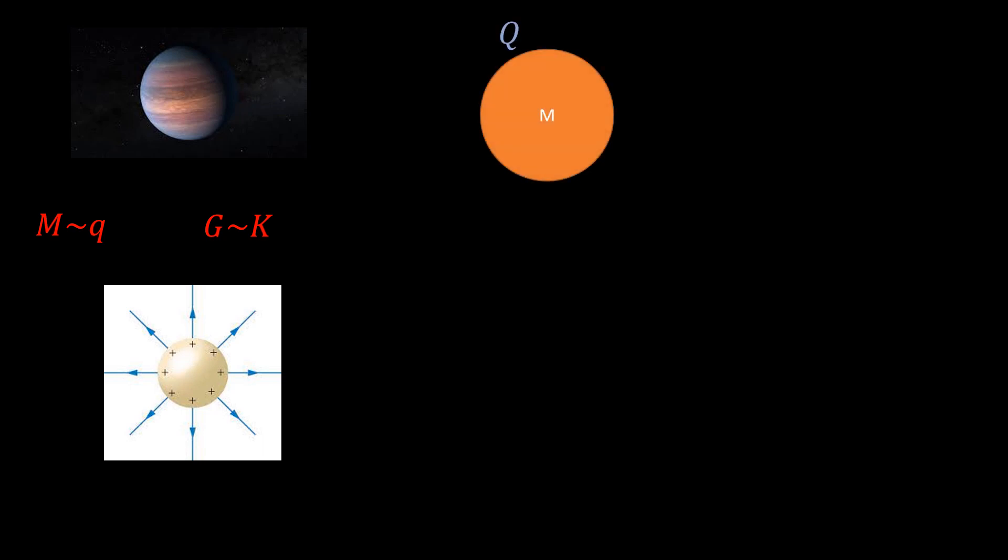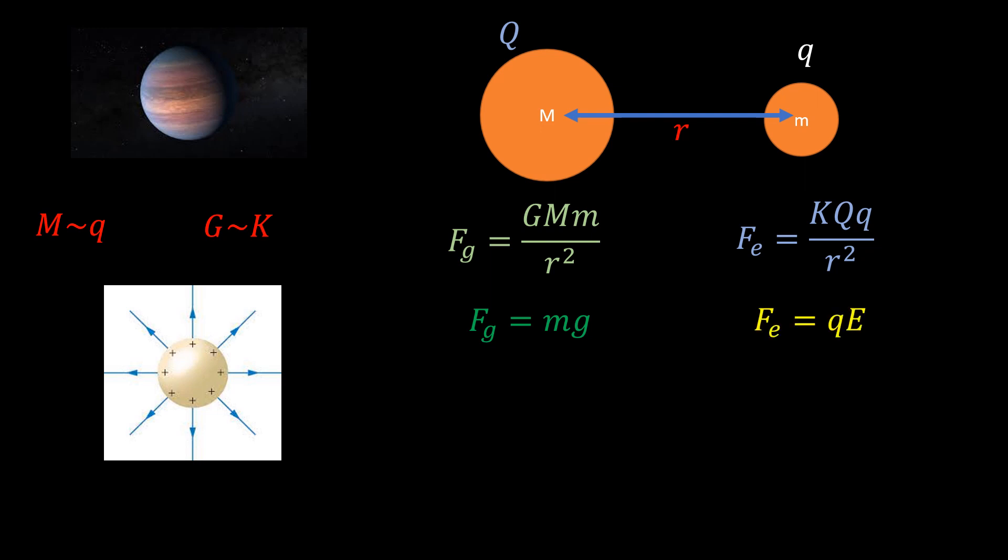Consider a large sphere of mass capital M and charge capital Q, and a small test mass of mass little m and charge little q. The gravitational and the electric forces between these bodies are as follows. As you know, the gravitational force equation can be written as the test mass times the gravitational field of the bigger mass. Also, the electrostatic force equation can be written as the test charge times the electric field strength of the bigger charge. The gravitational and electric field equations are as follows. The capital G taking the place of K and M taking the place of Q. We see that little g and capital E are equivalent.